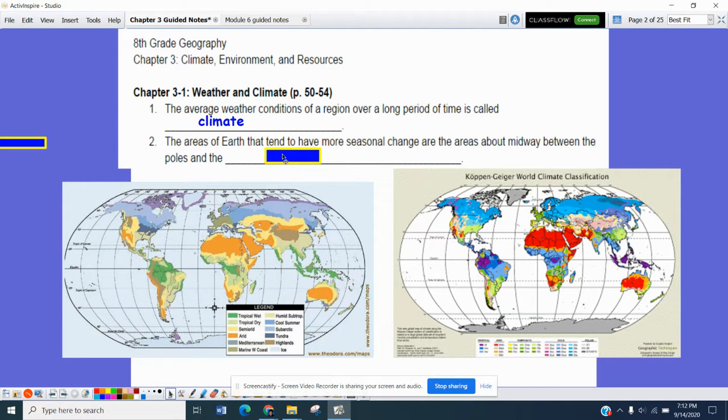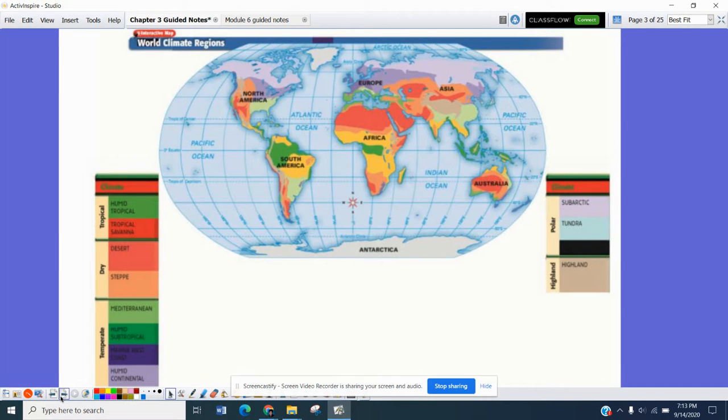Number two, the areas of the earth that tend to have more seasonal changes are the areas that are midway between the poles and the equator, hence places like Nebraska. The other day we were talking about the four seasons and if you are kind of halfway between the equator and let's say the North Pole, you're going to have that great opportunity to experience all four seasons within the course of a year. Unlike people that are living near the equator or up in the polar areas where it's either going to feel like winter most of the time or it's going to feel like summer for a good portion of the time. You can take a look at the world climate map here and you can kind of get that idea.